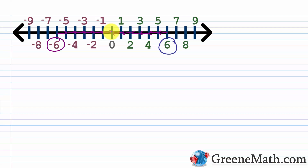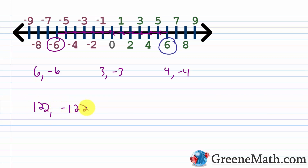So six and negative six would be opposites, three and negative three would be opposites, four and negative four, 122 and negative 122, and so on. One important property — if you add two opposites together, you get a result of zero. Think about adding negative six and six: if I started at zero and went six units to the left, then six units to the right, I end up back at zero, because their absolute values cancel each other out — one is negative, one is positive, same absolute value, so they cancel and end up at zero.